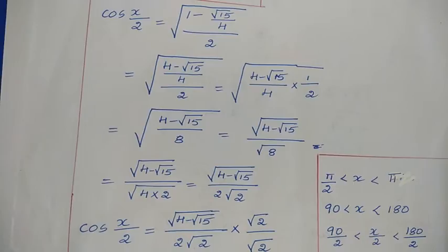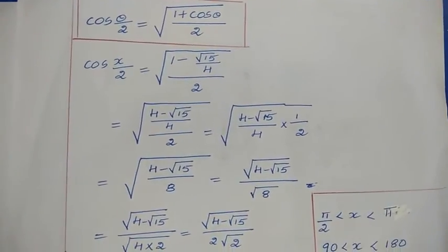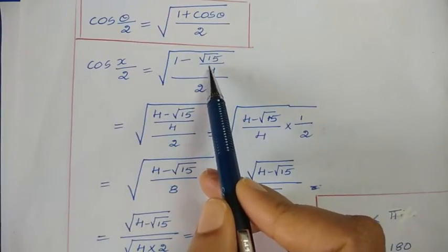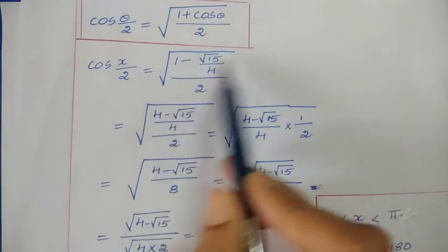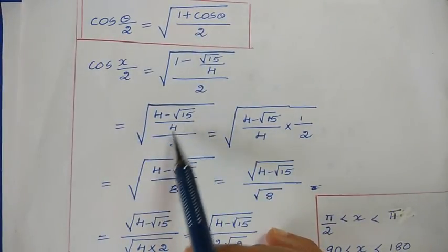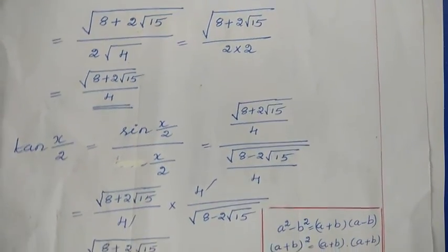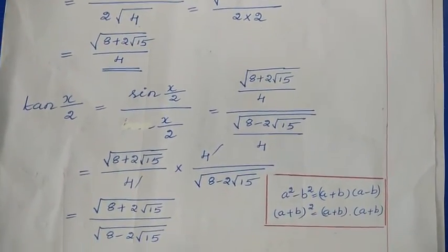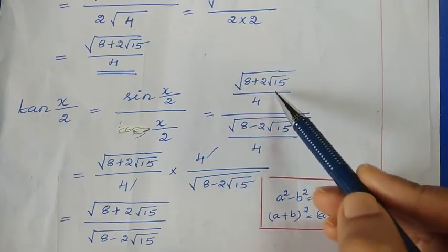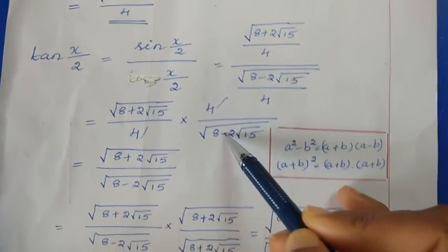Using cos(θ/2) = √((1 + cos θ)/2) with cos x = −√15/4: cos(x/2) = √((1 − √15/4)/2). Taking common denominator 4: √((4 − √15)/4 ÷ 2) = √((4 − √15)/8). Since √8 = √(4×2), taking 2 out: √(4 − √15)/(2√2).